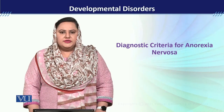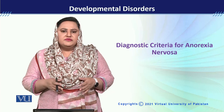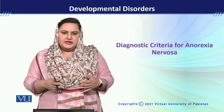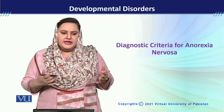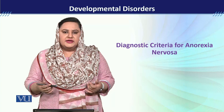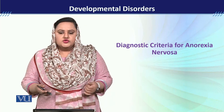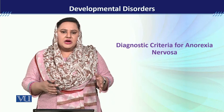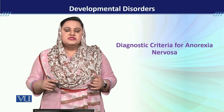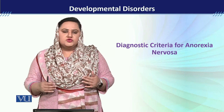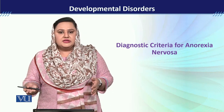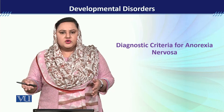Diagnostic Criteria for Anorexia Nervosa. We will see what DSM-5 says about the conditions in which a person, child, or adult can be given an anorexia nervosa diagnosis. For doing the diagnosis, there are certain criteria which we need to understand. When a client has signs and symptoms, they lead to the classification of this disorder.